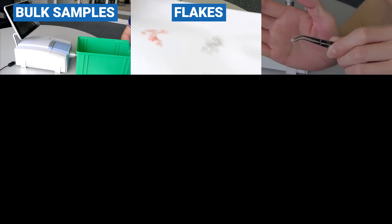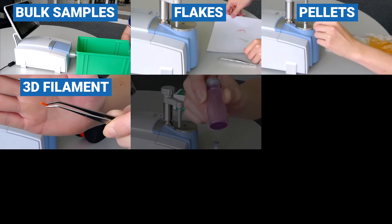FTIR spectroscopy can be used to analyze practically any type of polymer, no matter its shape, size, or chemical composition.